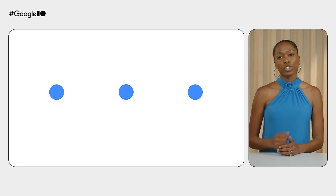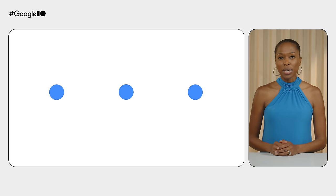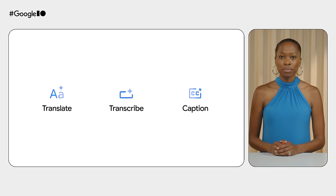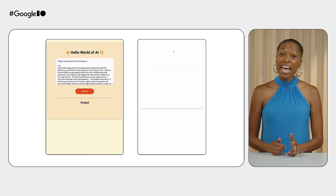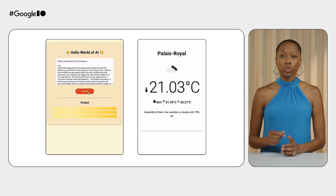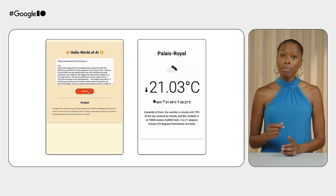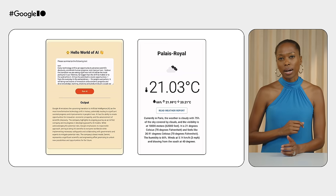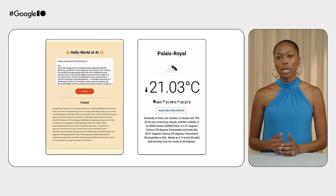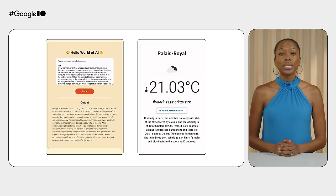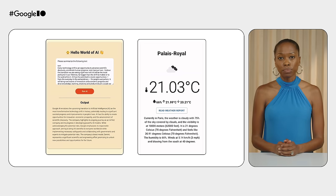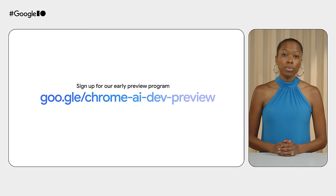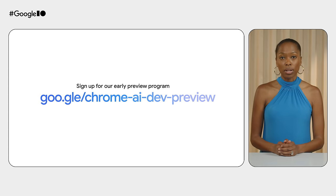All you'll have to do is call a few high-level APIs, like Translate, Transcribe, or Caption. And now you can explore further use cases with a Prompt API. This experimental API lets you send natural language instructions to an instance of Gemini Nano in Chrome. Join our early preview program and help us shape the future of web development.